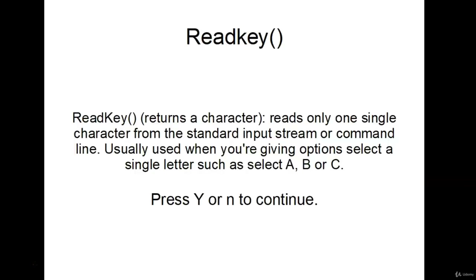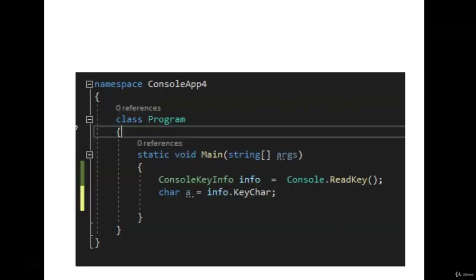Let's talk about the ReadKey method. ReadKey returns one single character from the standard input stream or command line. We've seen this before — when you're in an application that says 'press Y to continue' or 'select A, B, C' — that's an example of that. When you call console.ReadKey, it returns a value of type ConsoleKeyInfo. ConsoleKeyInfo is just another data type like int or string. We declare a variable info and assign it the value of console.ReadKey — whatever the user enters, that character is transferred into info.